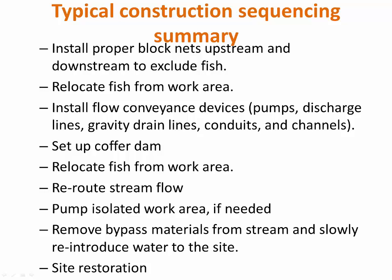Putting all the components together, the following is a typical sequencing. The process begins with placing block nets upstream and downstream of the project area. Biologists can then capture and safely relocate fish trapped in the work zone, often by walking the second block net downstream to herd fish out. Next, the water diversion system is set in place via a bypass pipe or plastic lined channel. A temporary cofferdam is slowly built upstream of the work area and the stream is diverted through the bypass.